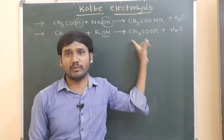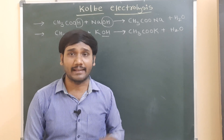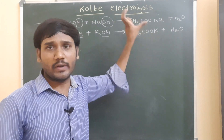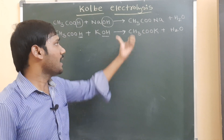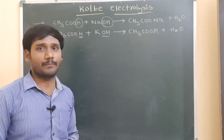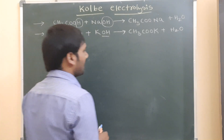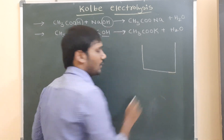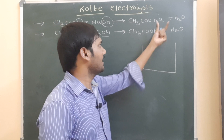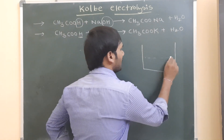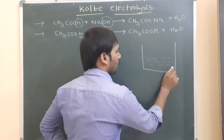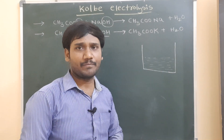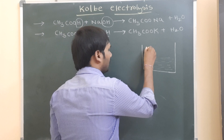By using sodium or potassium salt of carboxylic acid we can prepare alkanes — this process is called Kolbe electrolysis, meaning we prepare alkanes by applying electricity. For the preparation, I am taking one electrolytic cell containing a mixture of the salt and water — either sodium salt or potassium salt of acetic acid dissolved in water.